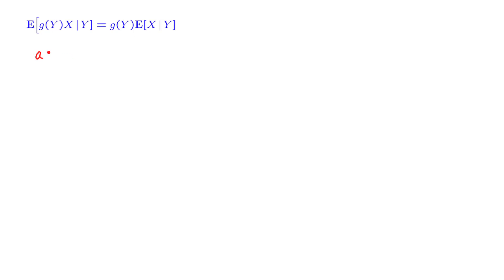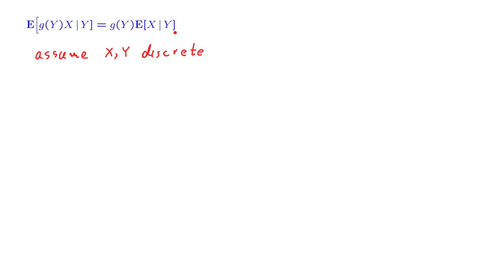How does one establish such a result formally? Let us take the discrete case — assume that X and Y are both discrete. What does it take to establish a fact of this kind? We want to show that two random variables are equal. That amounts to the following: we consider an outcome of the experiment, and we want to show that whatever the outcome is, these two random variables will be the same.